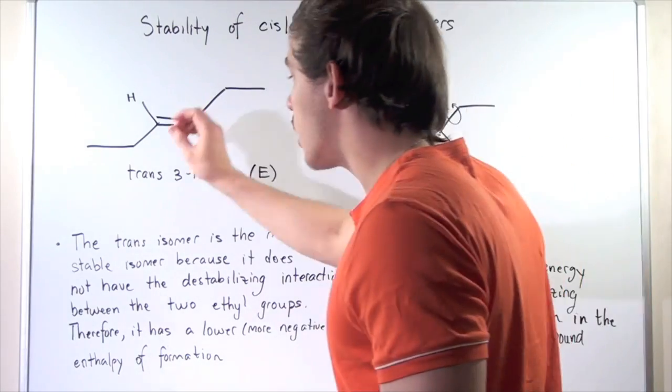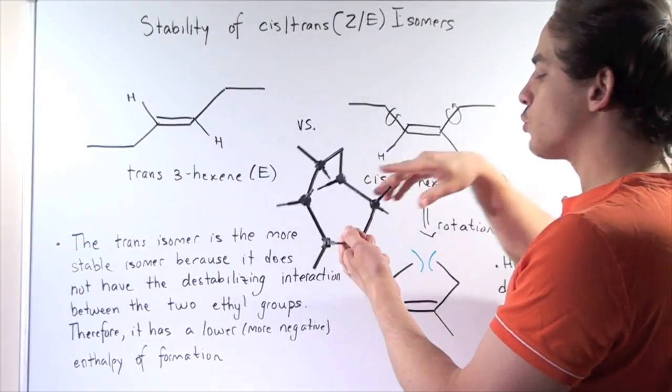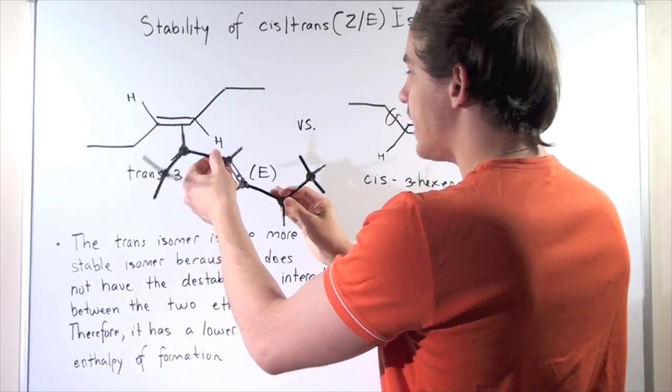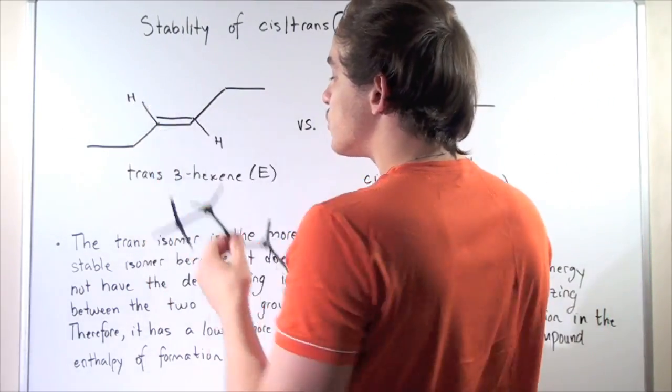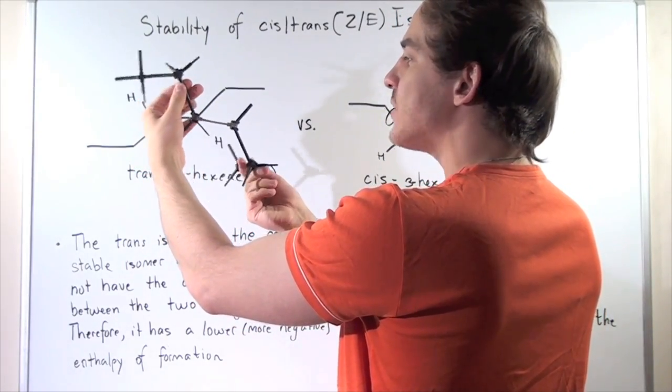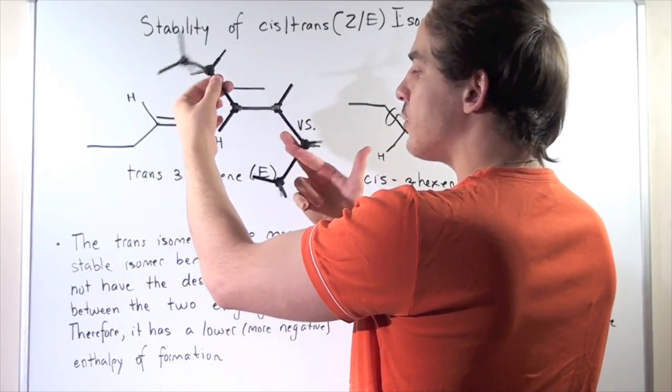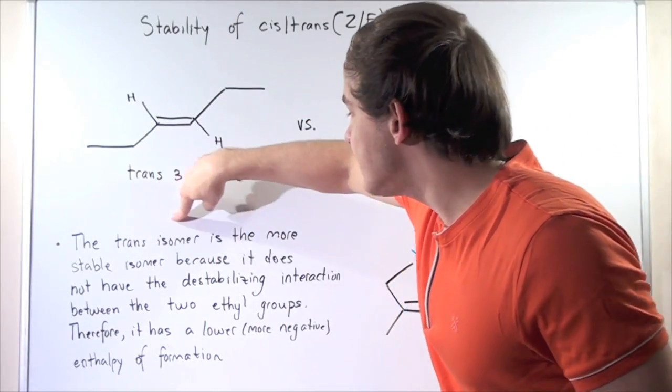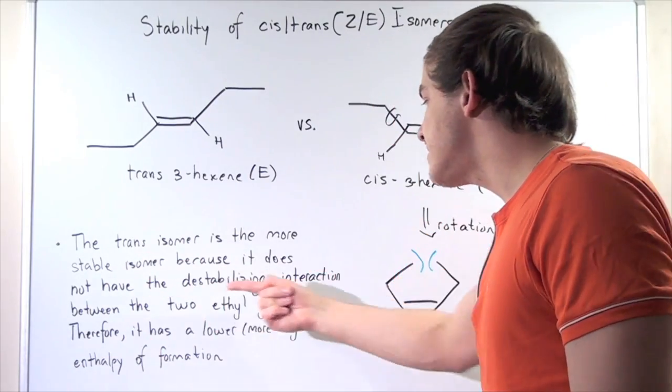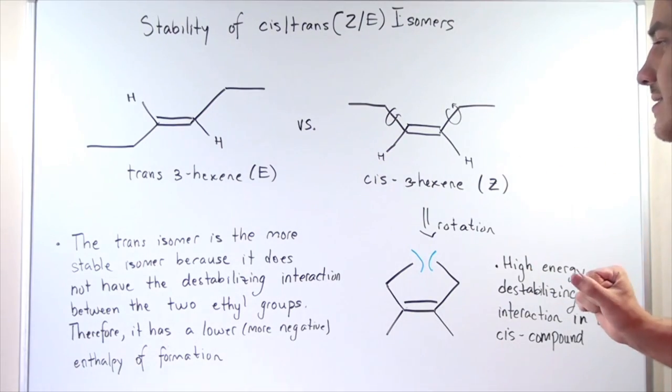What about our trans compound? Let's suppose we move this ethyl group onto the bottom. So now we have our trans-3-hexene. Now, no matter how much they rotate, there's no interaction between these destabilizing ethyl groups, between these large ethyl groups. And that means the trans isomer is the more stable isomer because it does not have the destabilizing interaction between the two ethyl groups, like in the cis compound.